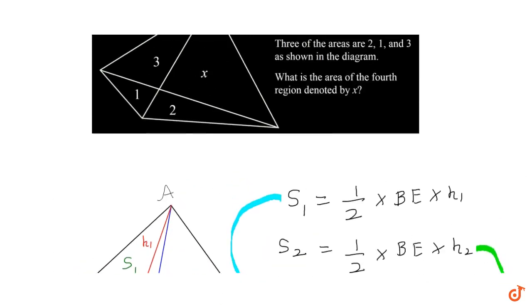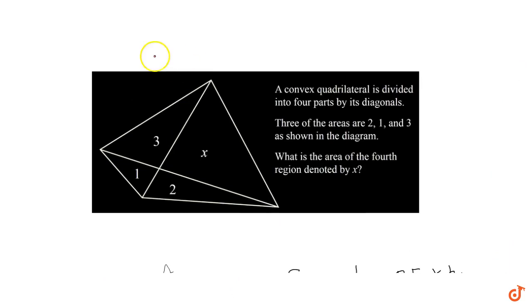Now coming to our original problem, it's quite simple. This area is 3, this is 2, this is 1, and this is x. So 3 times 2 equals 1 times x, therefore x equals 6. This is the answer for this problem.